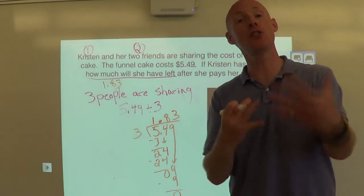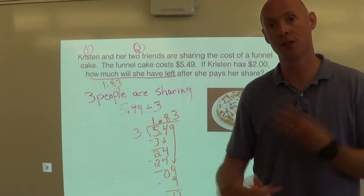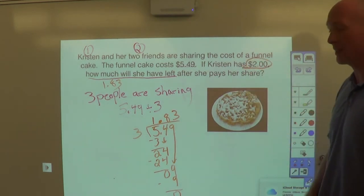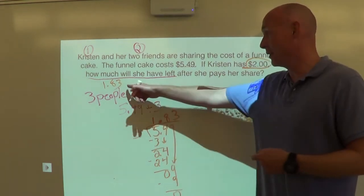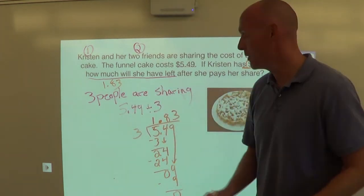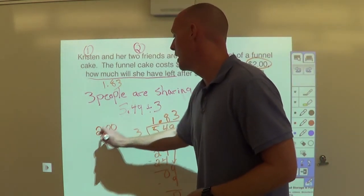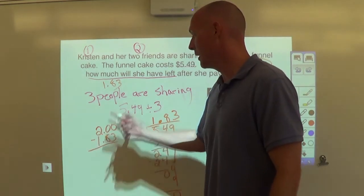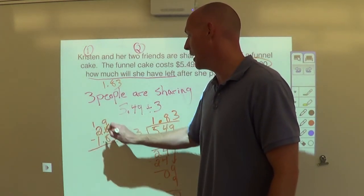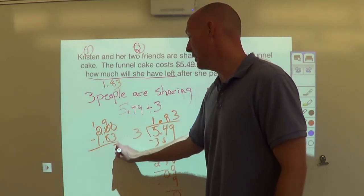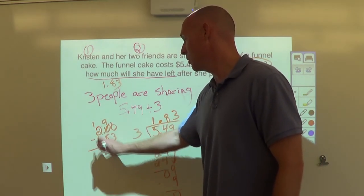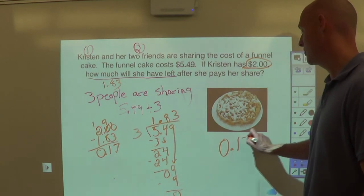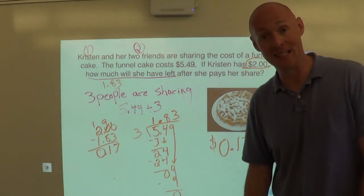But this is where it gets a little tricky. This is a two-step problem, because the question doesn't say how much does each person have to pay. In fact, it says how much does she have left after she pays her share. Well, we know Kristen has 2 bucks. So after Kristen pays her share, which is $1.83, how much is she going to have left? Subtraction. We take her 2 bucks, minus that $1.83, and let's subtract it out. Well, we can't do that with 0, so we've got to make that a 1. We've got to make that a 10, then a 9. Boom. Make that a 10. So 10 minus 3, that's 7. 9 minus 8 is 1. Bring that decimal. Boom. 0.